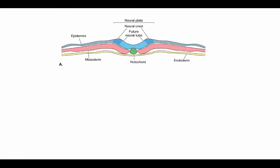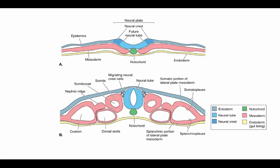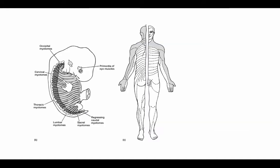Now let's think about how this nervous system develops. Reviewing neurulation: we have a trilaminar disc with layers of endoderm, mesoderm, and ectoderm. Just dorsal to the notochord, we get a thickening of the ectoderm to form the neural plate. That neural plate starts to fold upward, forming a neural groove, and the two sides join together to form the completed neural tube, with neural crest cells off to the side. The neural tube then starts sending out spinal nerves.